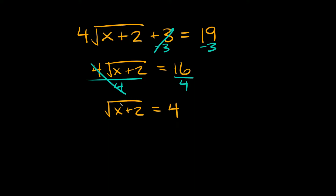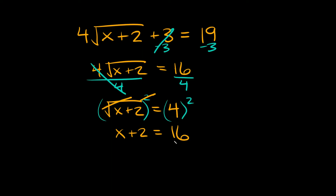We're just left with our square root, so we're going to square this whole thing on both sides. The square root and the squared exponent cancel out, leaving us with x plus 2 is equal to 4 squared, which is 16. Then we subtract 2 from each side and we get x is equal to 14. That's your answer.